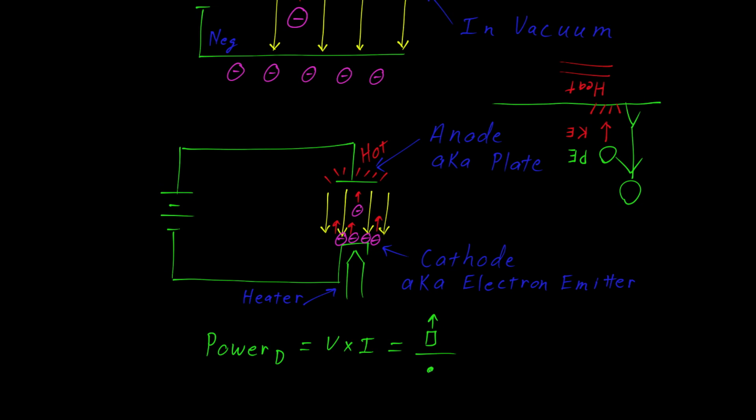Likewise, in the vacuum tube model, that electron, when it sits on the cathode, has potential. So it's potential per charge.